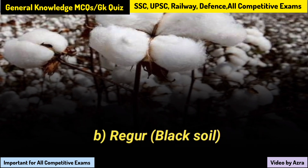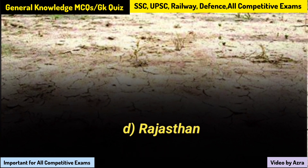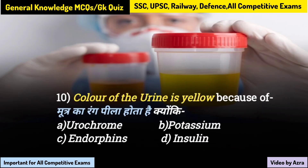Which state has the largest wasteland area? Kis rajya mein sabse bada banjar bhoomi kshetra hai? Rajasthan. The color of urine is yellow because — mutra ka peela rang hota hai kyunki —